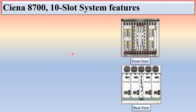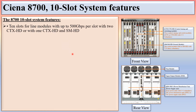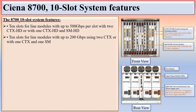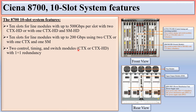The Ciena 8700 10-slot system features 10 slots for line modules with up to 500 Gbps per slot using 2 CTSHD cards or 1 CTSHD and 1 SMHD. With 2 CTS or 1 CTS and 1 SM, the system supports up to 200 Gbps per slot. The difference between CTSHD and CTS is only about capacity.